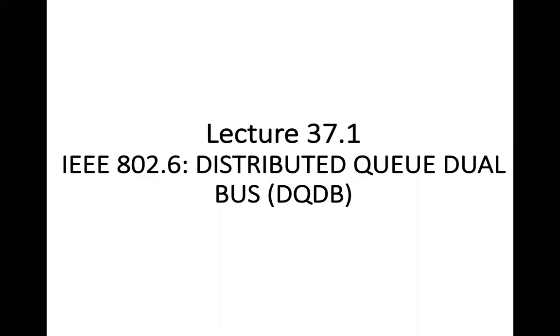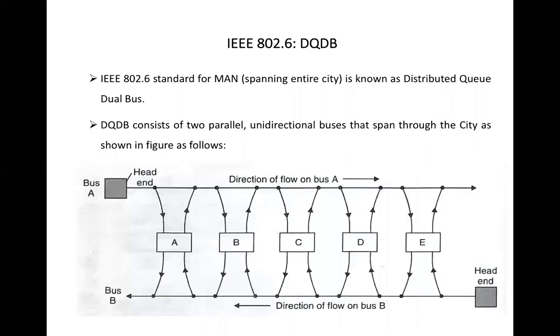Welcome to yet another session on the subject computer networks. The topic of today's discussion is IEEE 802.6 standard, that is the standard for metropolitan area network. This standard is also known as distributed queue dual bus, DQDB. So let's start the discussion on IEEE 802.6 DQDB.